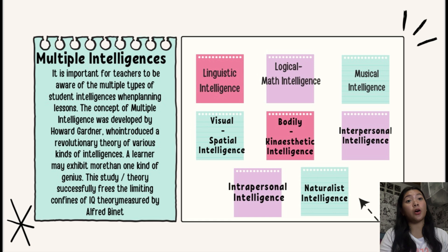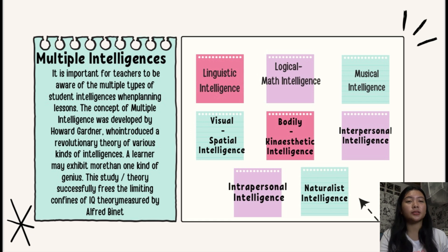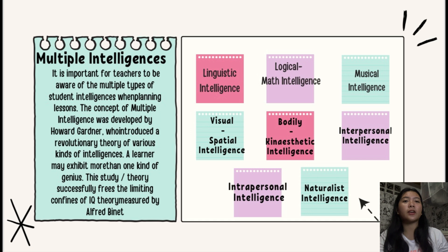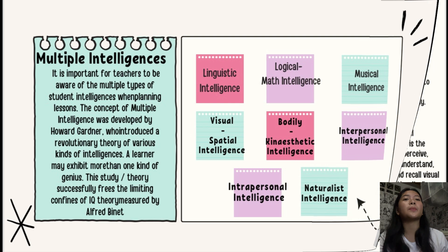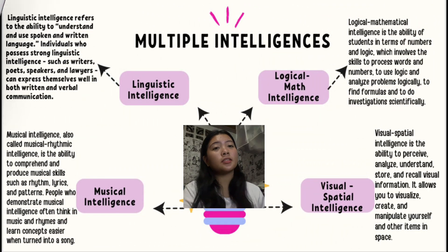Now let's move on to the next topic: multiple intelligences. It is important for teachers to be aware of the multiple types of student intelligences when planning lessons. The concept of multiple intelligences was developed by Howard Gardner, who introduced a revolutionary theory of various kinds of intelligences. A learner may exhibit more than one kind of genius, and this theory successfully frees the limiting confines of IQ as measured by Alfred Binet.